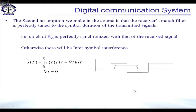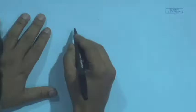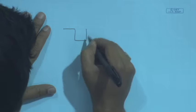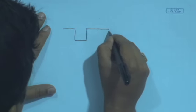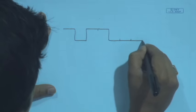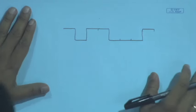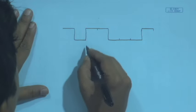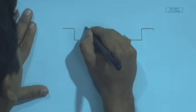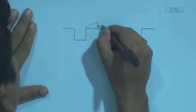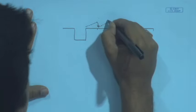The second assumption we make is about the matched filter — there is perfect matched filtering at the receiver. If we consider symbols in baseband occupying a certain symbol duration, for matched filtering of rectangular pulses we typically use an integrate-and-dump circuit, which can be represented as an integration followed by a dump operation happening for every symbol duration, with values read off at the peak where the symbol duration ends.